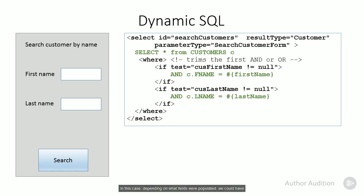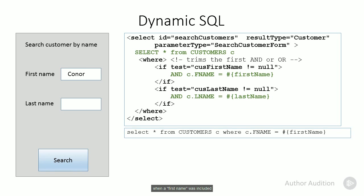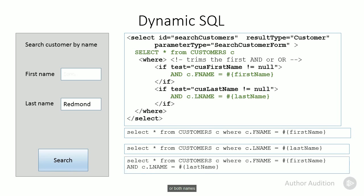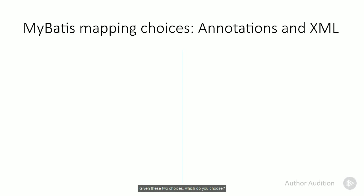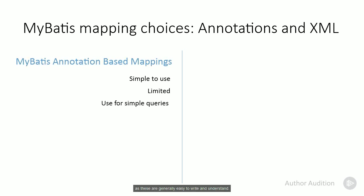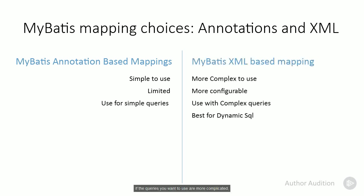In this case, depending on what fields were populated, we could have three different SQL SELECT statements generated — when a first name is included, or a last name, or both names. My advice would be to use annotation-based mappers where possible, as these are generally easy to write and understand. If the queries you want are more complicated in that they require dynamic SQL, collections, or nested selects, then you'll need to use XML-based mappers, which are more verbose but also more powerful.